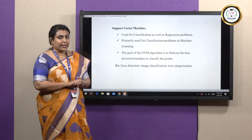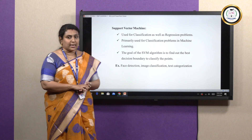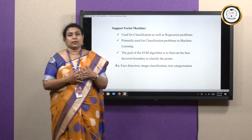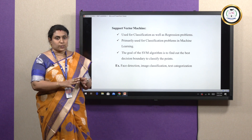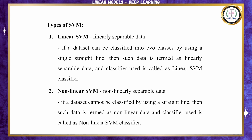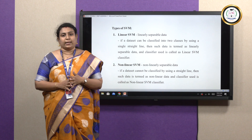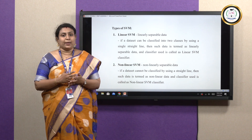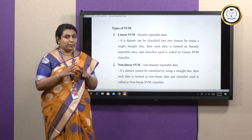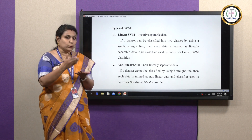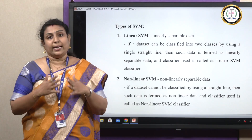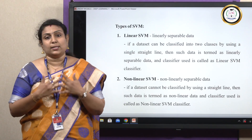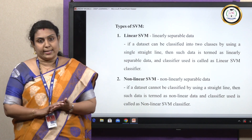Applications of SVM include face detection, image classification, and text categorization. There are two types of SVM: linear SVM and non-linear SVM. Linear SVM applies to linearly separable data — two classes that can be easily separated by a best fit line. Non-linear SVM applies to non-separable data that cannot be separated by a straight line.